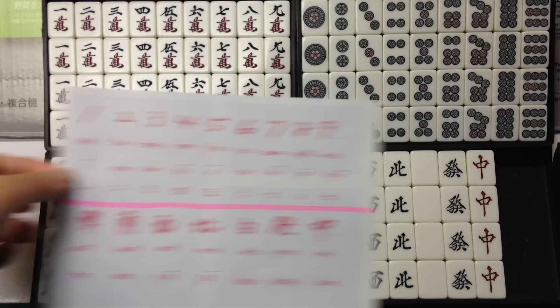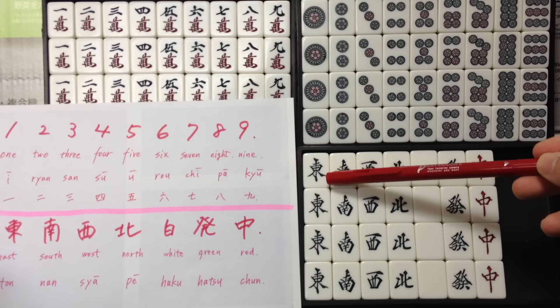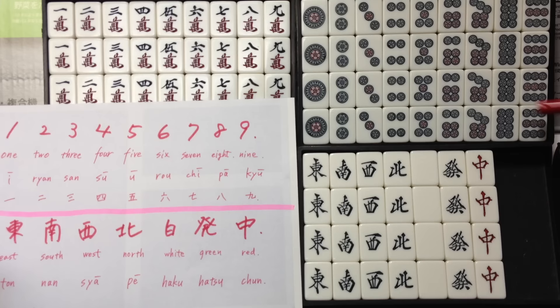In English: East, South, West, North, White, Green, Red. In Chinese: Ton, Nan, Xia, Pei, Haku, Hatsu, Chun.